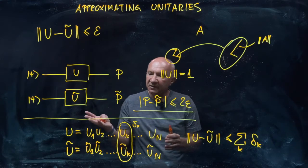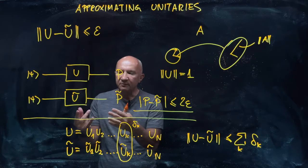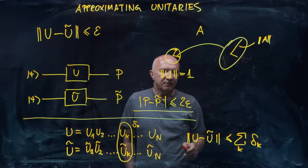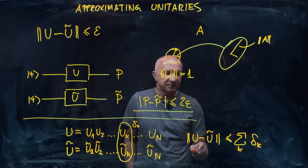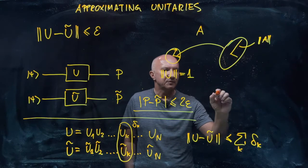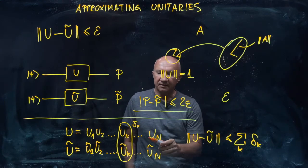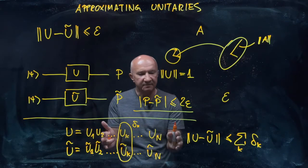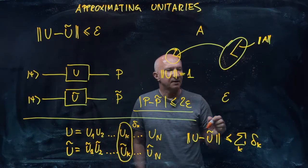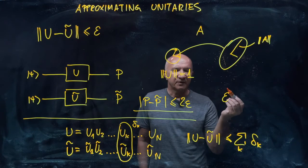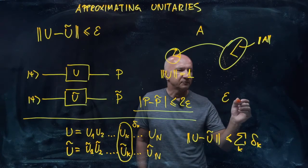So that means, for example, that if we want to implement u with precision epsilon, then if we have N gates, capital N gates, then each of them has to operate.